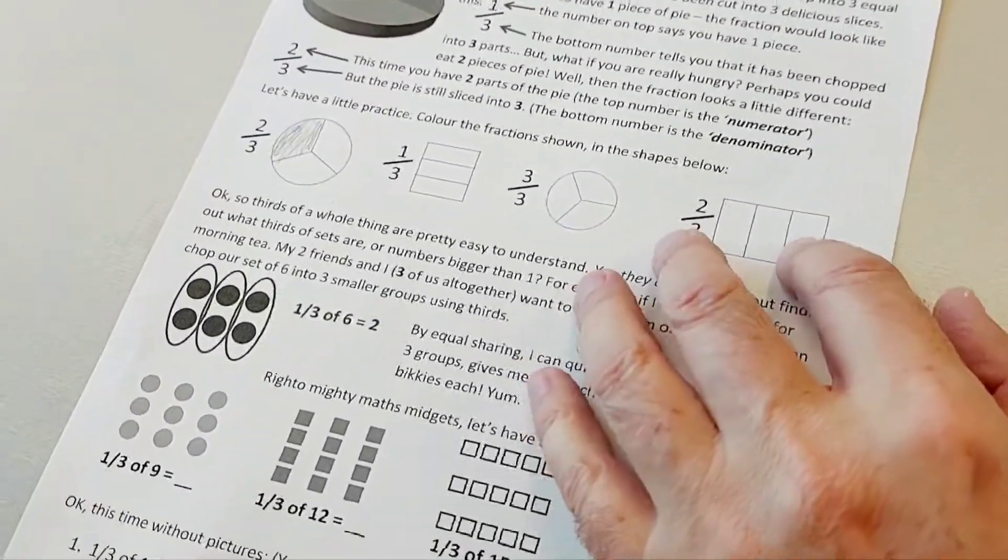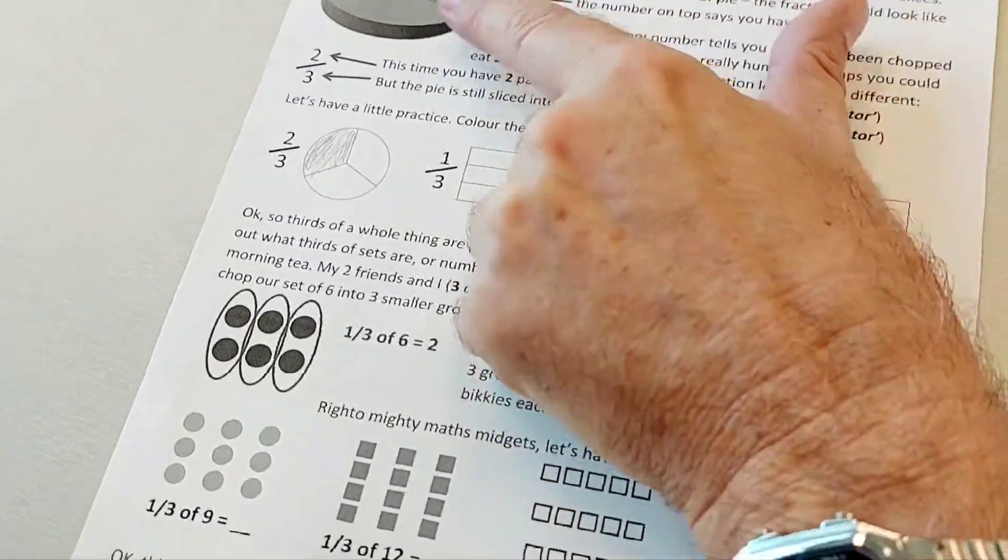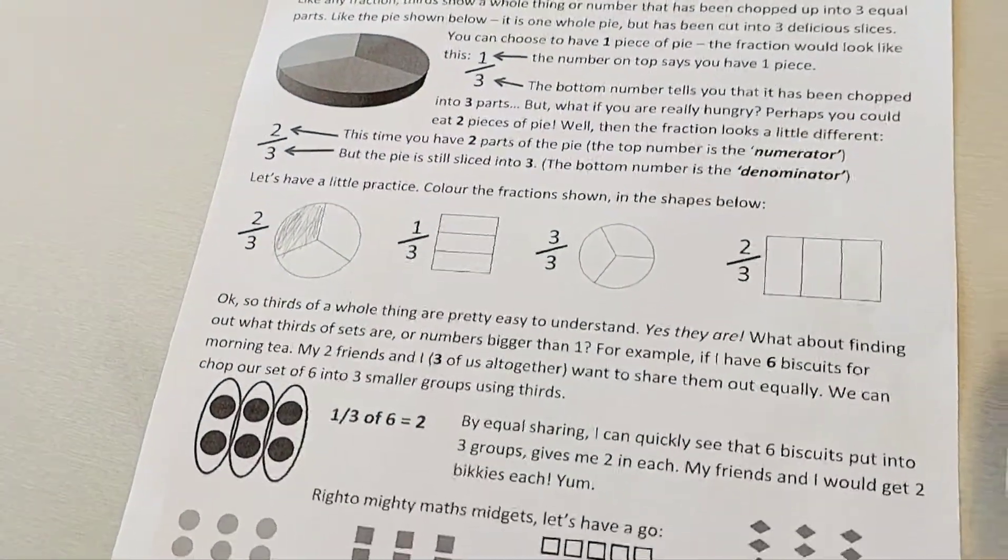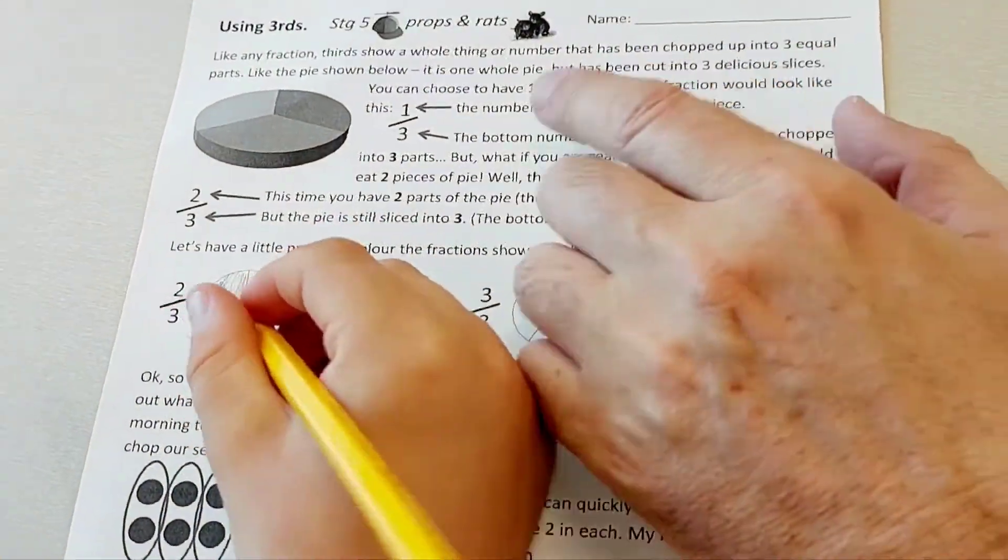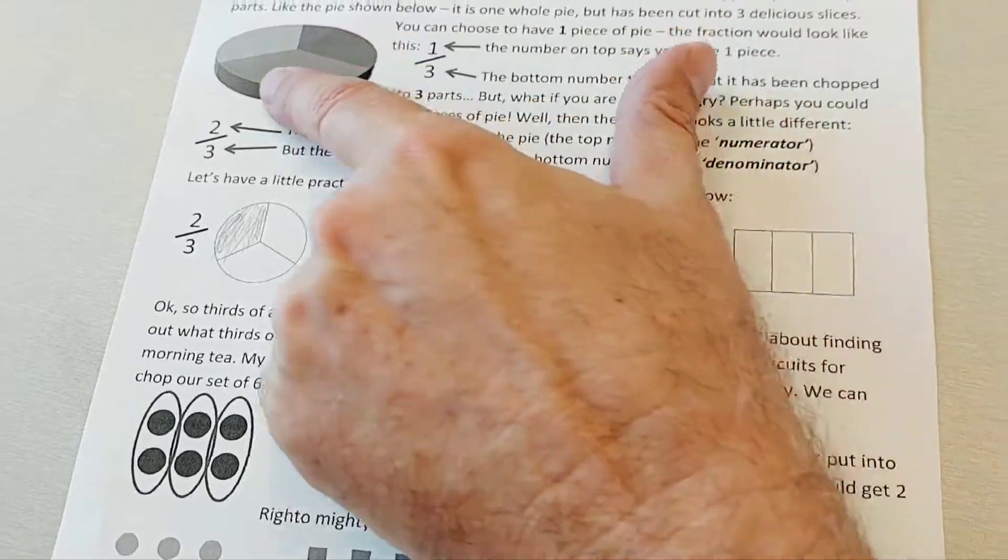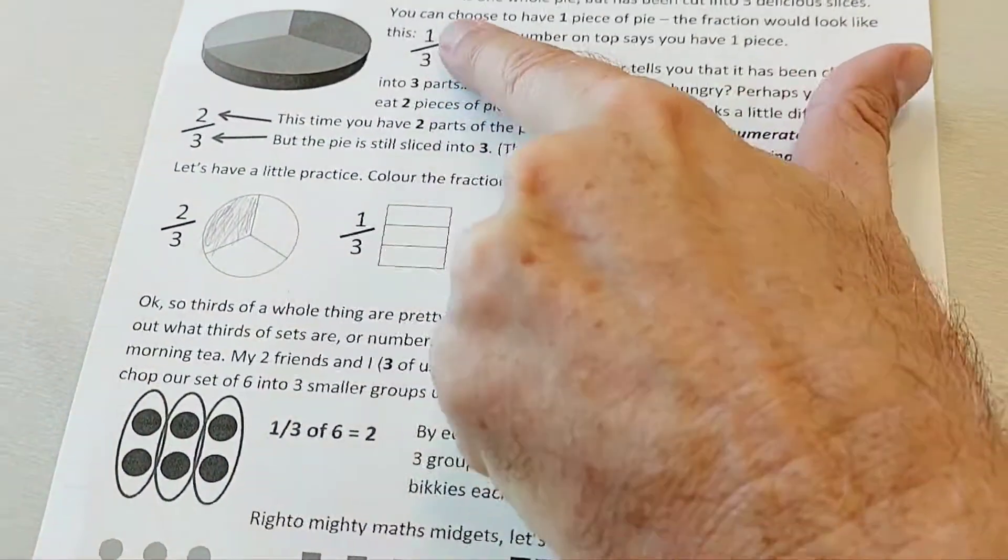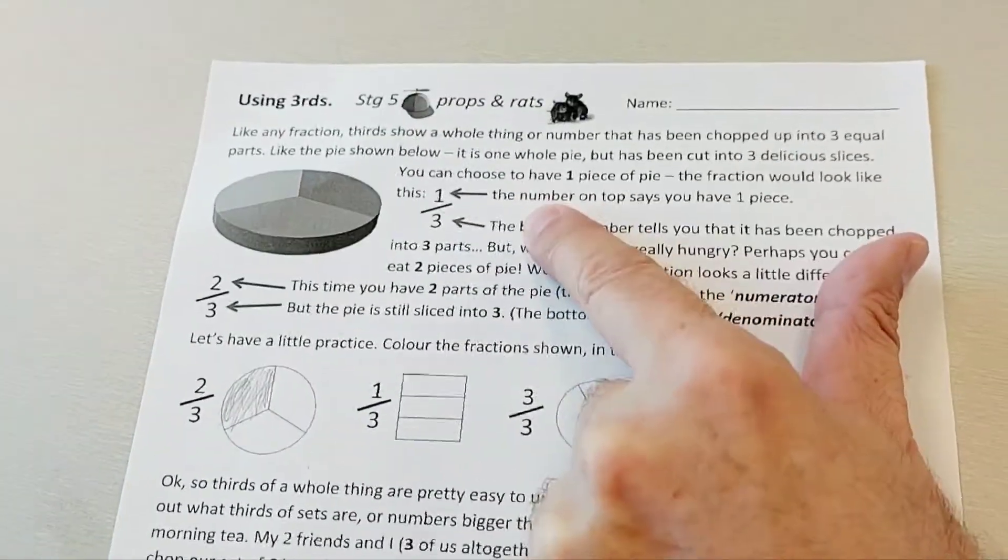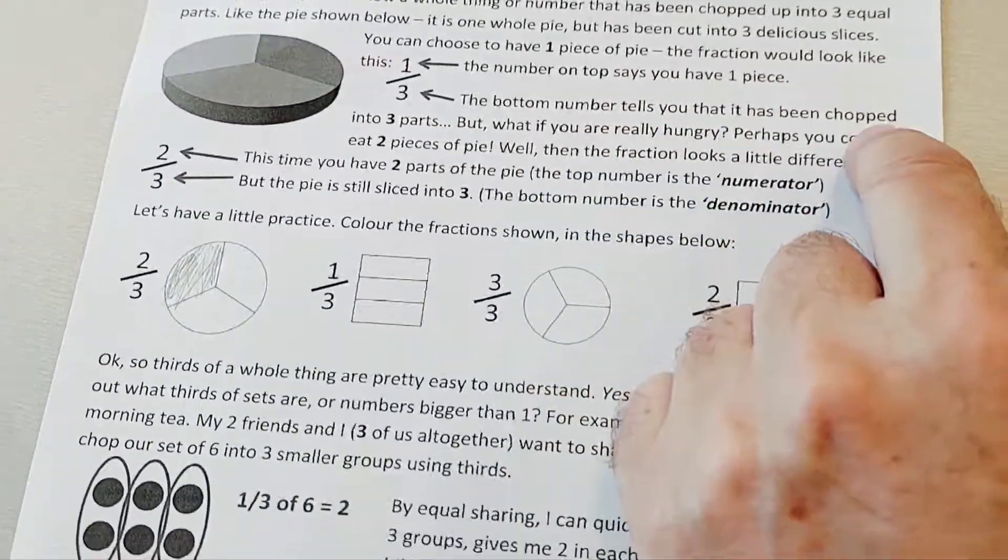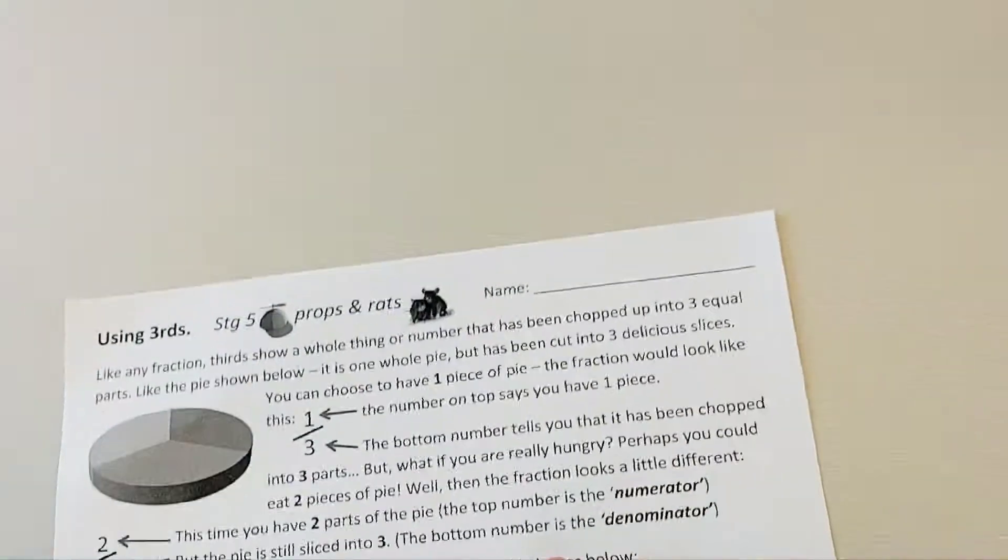Like the pie shown below, it is one whole pie but it's been cut into three delicious slices. You can choose to have one piece of pie. The fraction would look like this: the number on top says you have one piece, right, and the bottom number tells you that it's been chopped up into three parts.